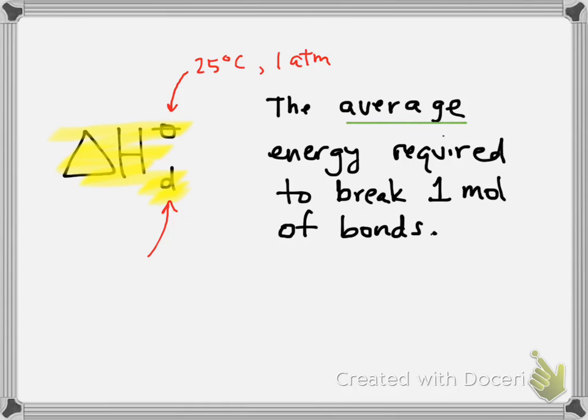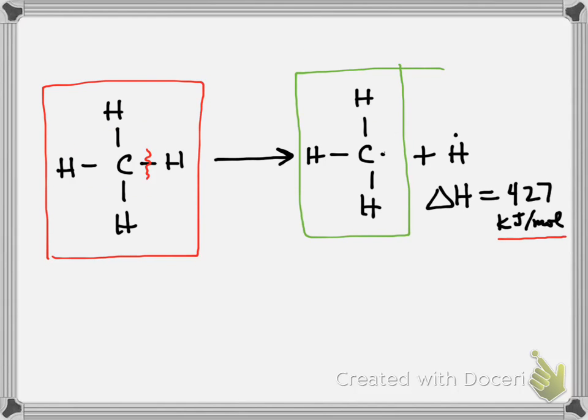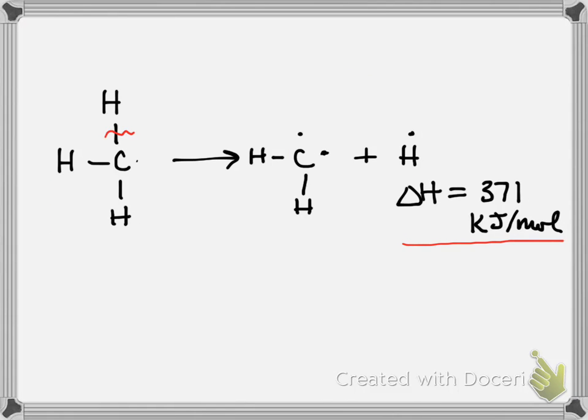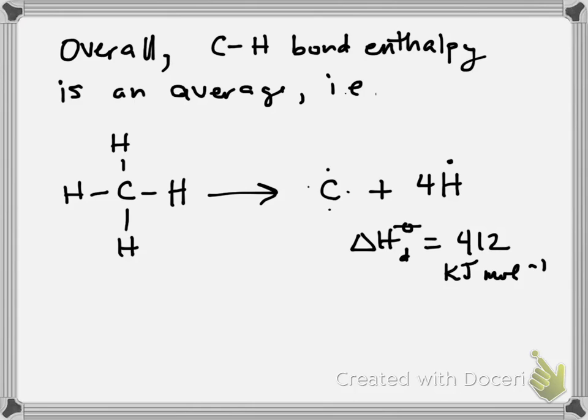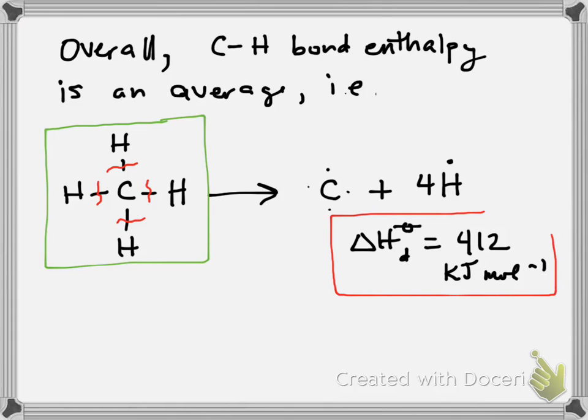So what that means is really instead of the situation that we first looked at or even a secondary situation, the bond enthalpies that we're going to be dealing with are more of an overall average. So taking something like methane and breaking all of the carbon-hydrogen bonds, so severing not just one, but severing all of them, and then taking the average of the total energy to give us what we would call a bond dissociation energy. And this would be an average value for a carbon-hydrogen bond, 412 kilojoules to break one mole of carbon-hydrogen bonds.